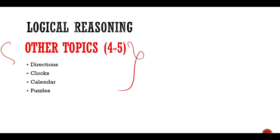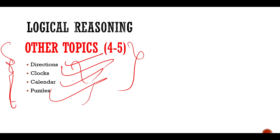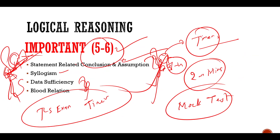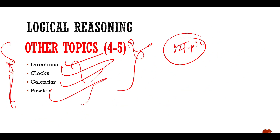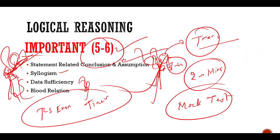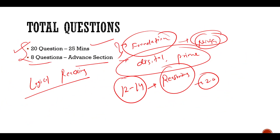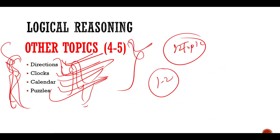The remaining topics can yield four to five questions: directions, clocks, calendars, and puzzles. Apart from these topics, you don't need to prepare anything else — I've removed most topics and narrowed it down to just 12 topics total. To summarize: the four most important topics give 8 to 10 questions, the second group gives 5 to 6 questions, and directions, clocks, calendars, and puzzles give 4 to 5 questions. One to two questions may vary by shift. This is the full syllabus for reasoning.